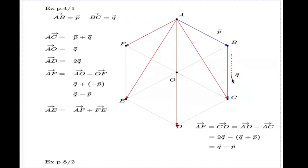If you substitute AF—we just found it, q take p—and FE is just another q, that will be the result. This vector. And now we know every diagonal in vector terms of my hexagon.